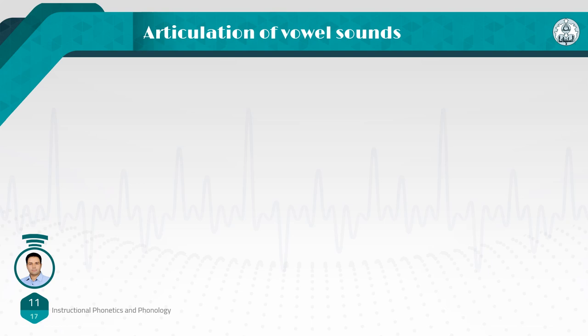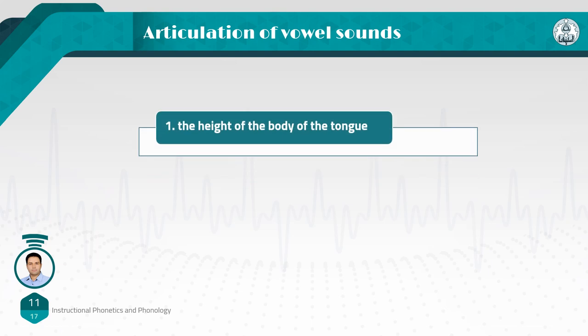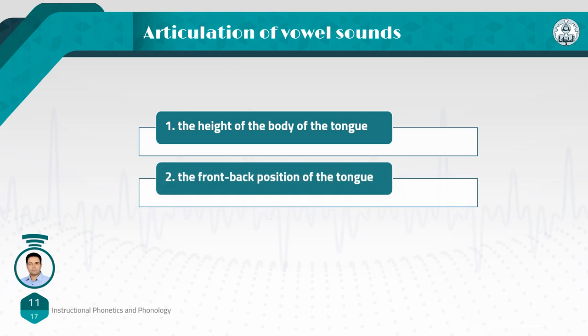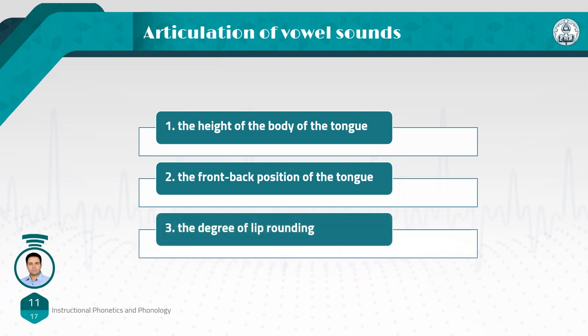In summary, we can say that the targets for vowel gestures can be described in terms of three factors: first, the height of the body of the tongue — that is high, low, or mid; second, the front or back position of the tongue; and the third is the degree of lip rounding. Using these three factors, we can describe vowels.